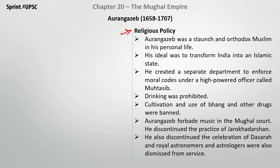Regarding religious policy, Aurangzeb was a staunch orthodox Muslim in personal life. His ideal was to transform India into an Islamic state. He was an orthodox Muslim who had a separate department to enforce moral conduct, under a high-powered officer named Mushtasip. Drinking was prohibited.